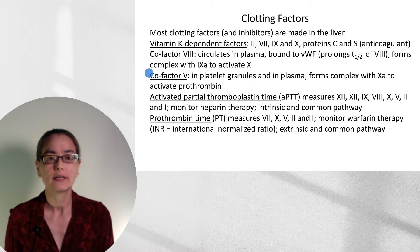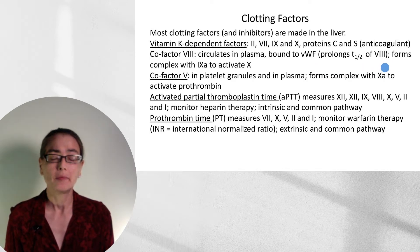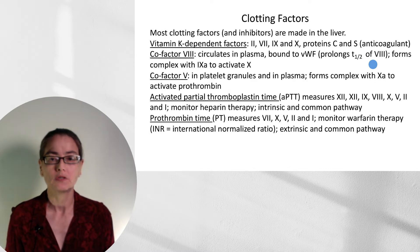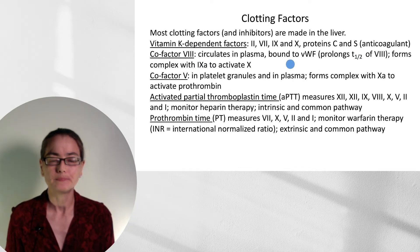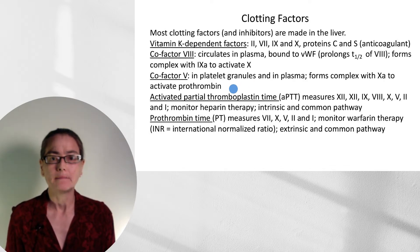There are also two cofactors to describe. Cofactor VIII is absolutely essential — it circulates in the plasma bound to von Willebrand's factor. This binding prolongs the half-life of factor VIII significantly, from about 2.5 hours to 12 hours. This relates to clotting disorders such as von Willebrand's disease and hemophilia A. Cofactor VIII forms a complex with factor IXA to activate factor X, which is central to the entire process. Cofactor V is found in platelet granules and in plasma, and it forms a complex with XA to activate prothrombin, moving us to thrombin.